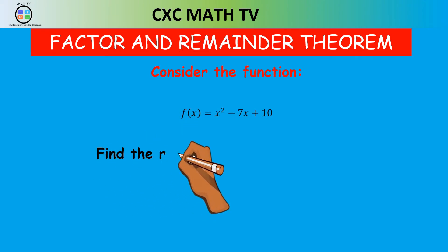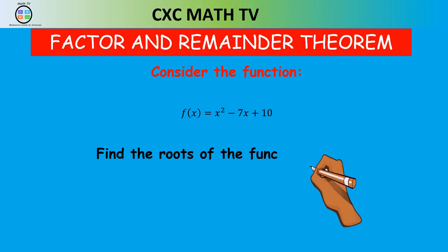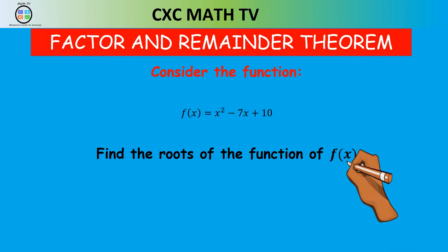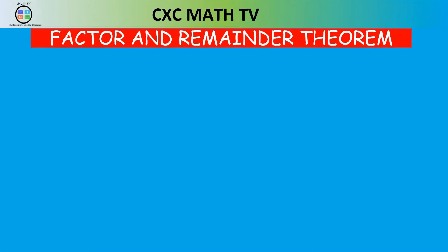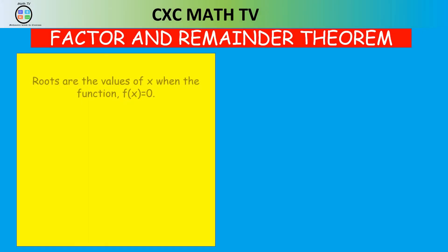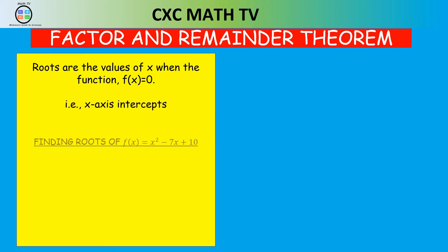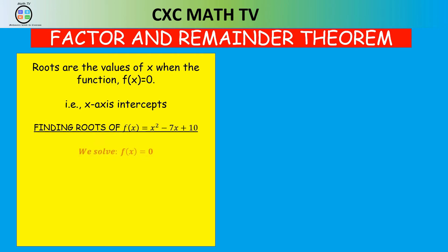f of x equals x squared minus 7x plus 10. Find the roots of the function f of x. From CSEC Math days, we know that roots are the values of x when the function is equal to 0, or some people may call them x-intercepts. So finding the roots of f of x, we know we're supposed to solve f of x equal to 0.